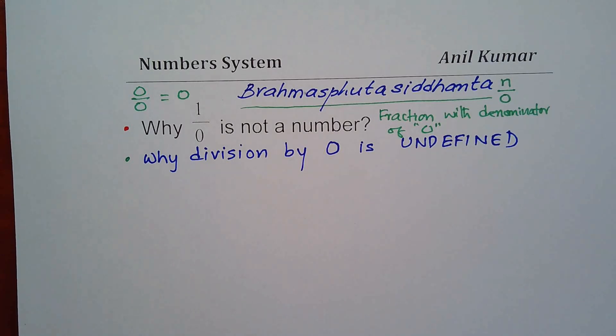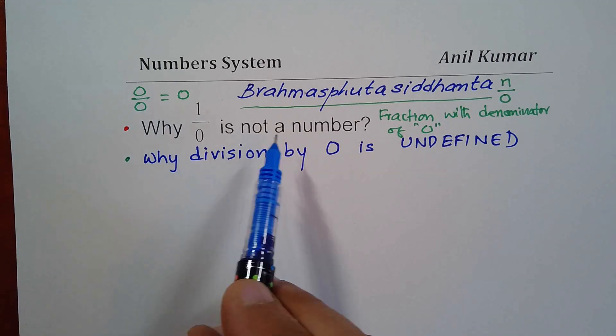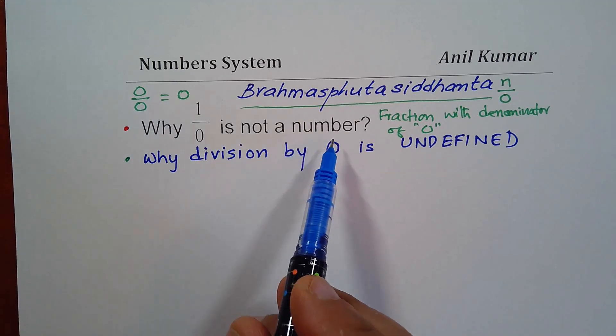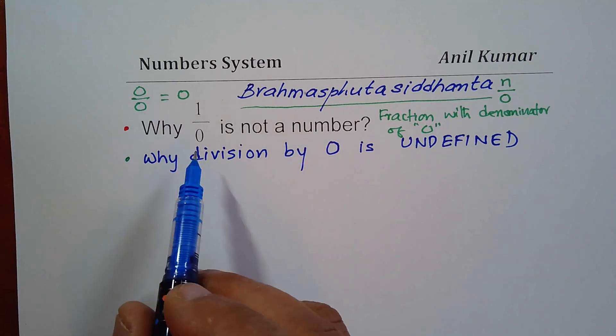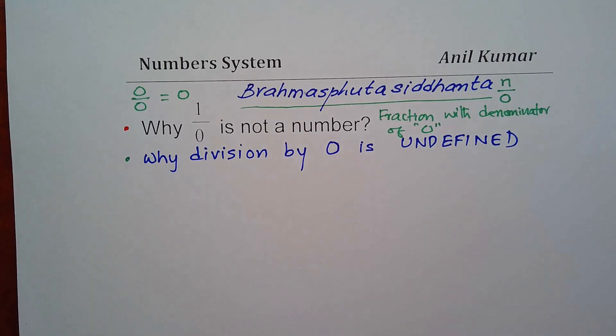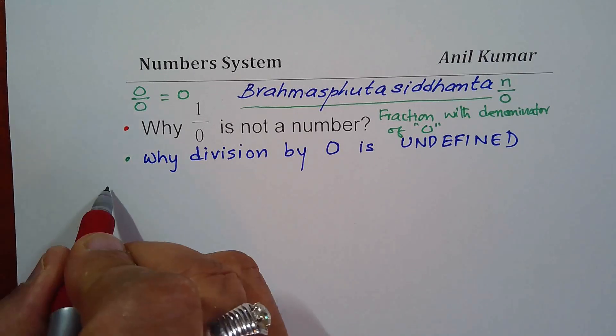Now, coming back to our number system, let us understand why 1 over 0 is not a number. I'll take you back to properties of numbers, and then from there, we will prove that 1 over 0 is not defined. So let's get back to properties of numbers.